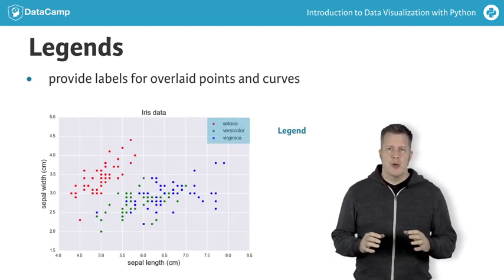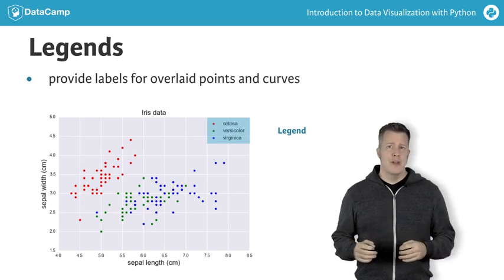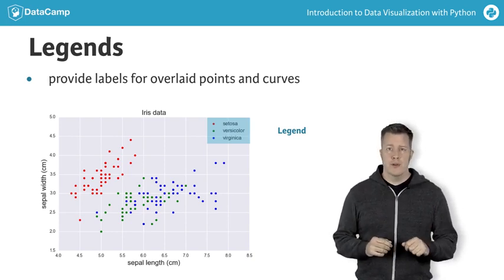Here the famous iris dataset is plotted showing the sepal width versus the sepal length for three species of flower: Setosa, Versicolor, and Virginica.